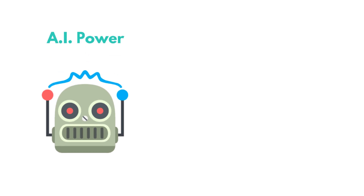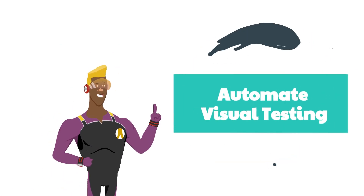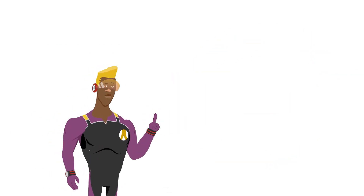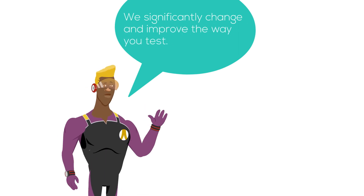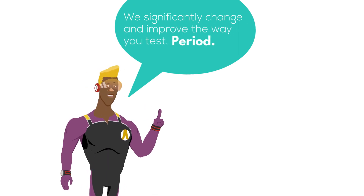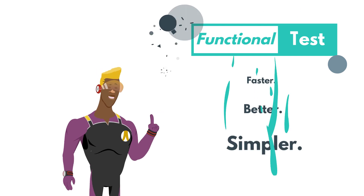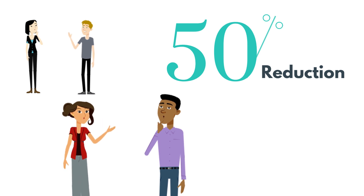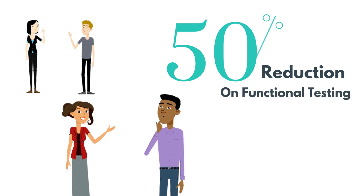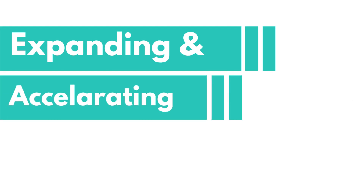At a high level, we add AI capabilities to your existing tools and workflows to enable the automation of visual testing. By doing so, we actually significantly change and improve the way you test, with the ability to functional test faster, better, and simpler. Our customers report a reduction of at least 50% in the time spent on functional testing, all while significantly expanding and accelerating their testing coverage.